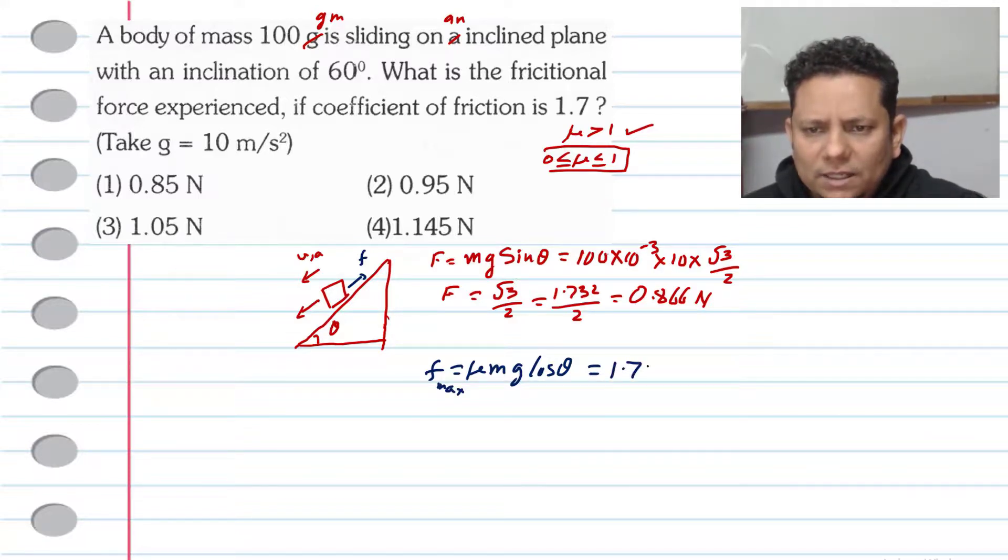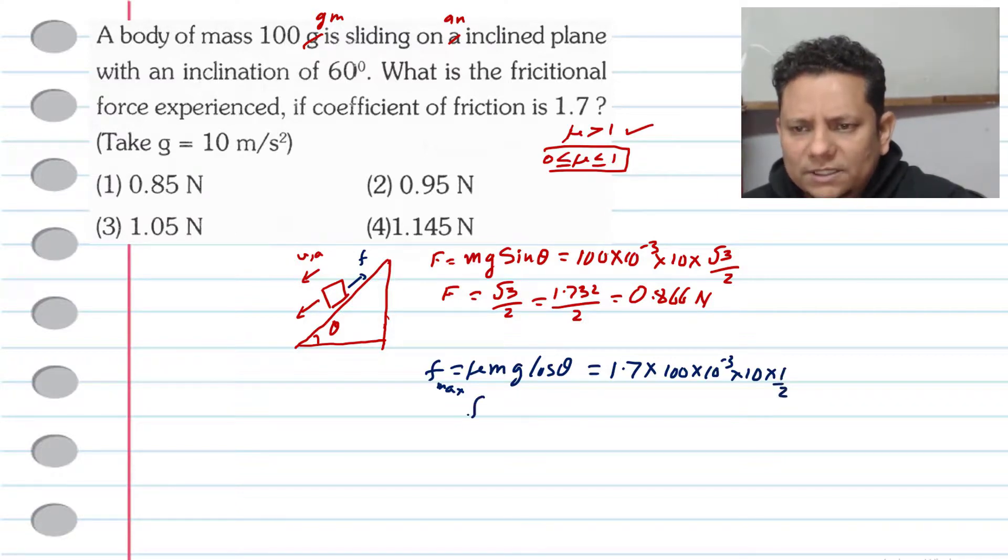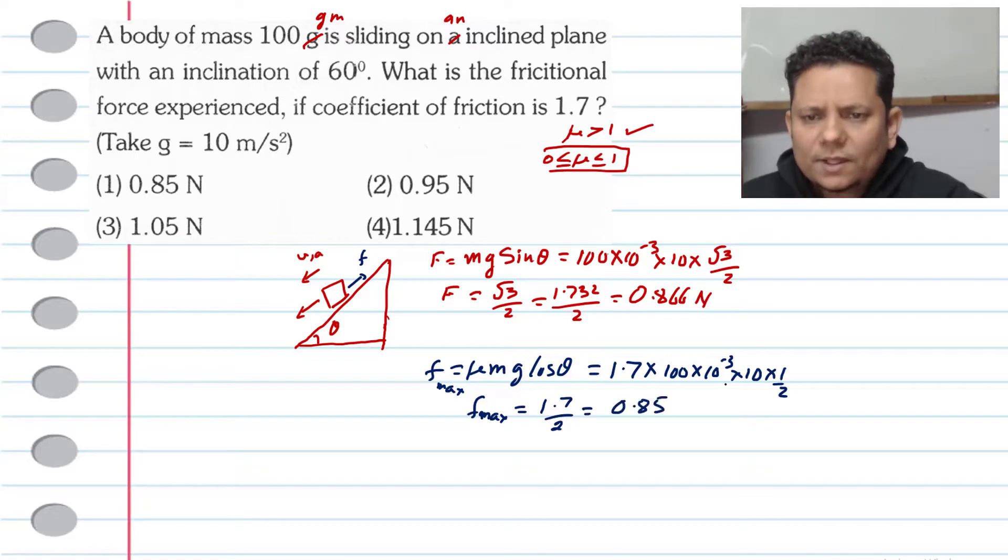Mu is 1.7 multiplied by m, which is 100 grams or 100 × 10^-3, multiplied by g value 10, multiplied by cos theta. Cos 60 is 1 by 2. So your maximum friction force value will be 1.7 divided by 2, which is 0.85 newton.